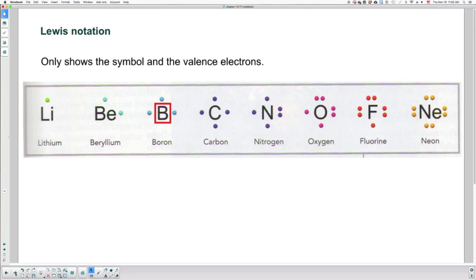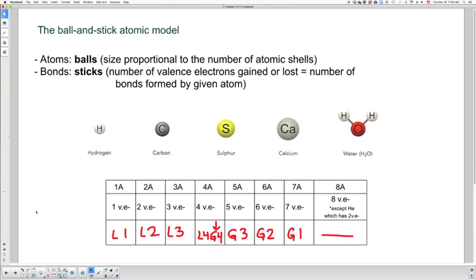Next, we have the ball and stick model. So it says it, ball and stick, because there are two components to this. So the atoms are represented by spheres or balls. Now their size is dependent on the size of the atom. So for example, hydrogen only has one energy level. It's a very small sphere, as opposed to calcium that has more energy levels. So we would draw a bigger sphere.